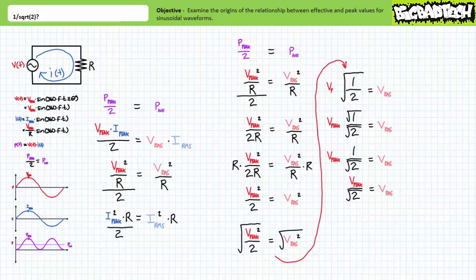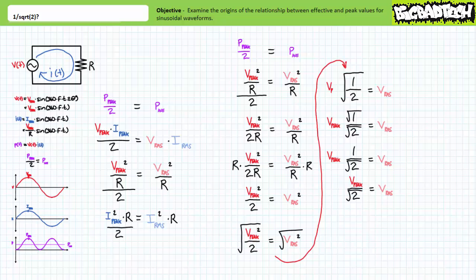Where does one over square root two come from? Right here. Because average power is half of peak power, one over square root two is the square root of a half. Get it? 0.707 times 0.707 is 0.5.